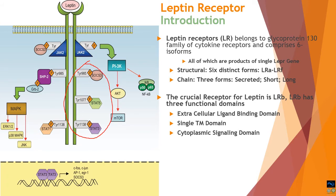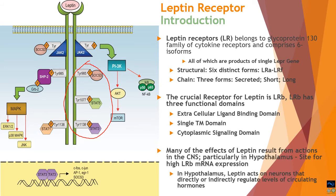Many effects of leptin result from leptin signaling in the central nervous system, particularly in the hypothalamus where LRb expression is very high. This expression is concentrated on specific nuclei such as the arcuate nuclei, which are highly responsive to leptin secreted by adipose tissues. Thus adipose tissue mediates its feedback mechanism via leptin receptors on the hypothalamic nuclei, informing the central nervous system of the state of energy repletion in the body.